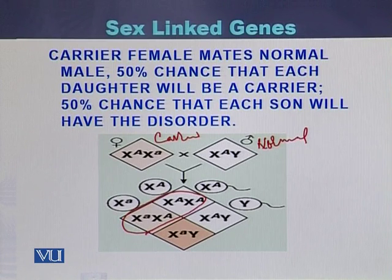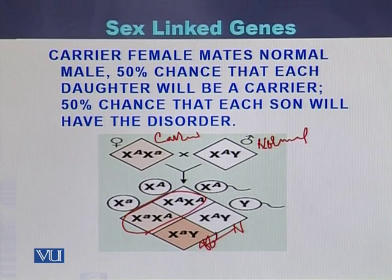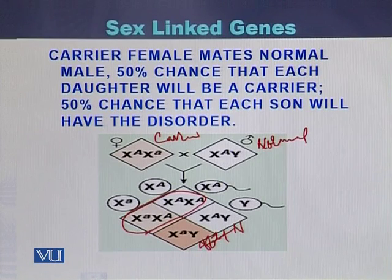In such a cross, one son is normal while the other son is affected. So where the female is a carrier and the male is normal, there will be a 50 percent chance that daughters will be carriers of the disease while sons will be affected.